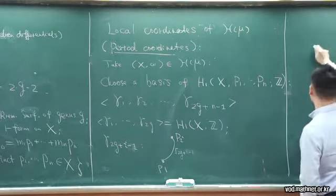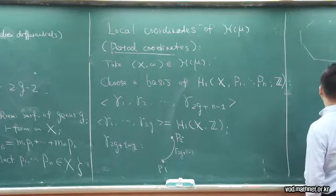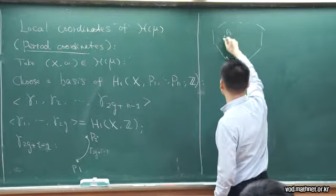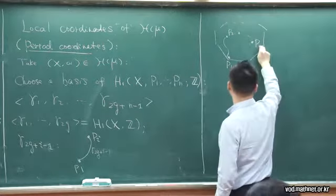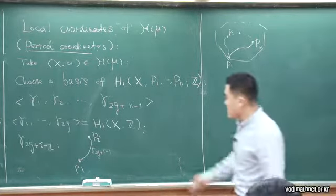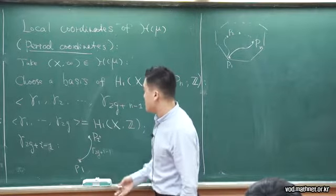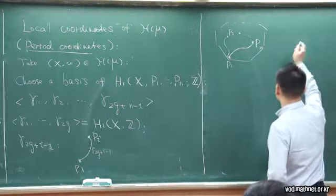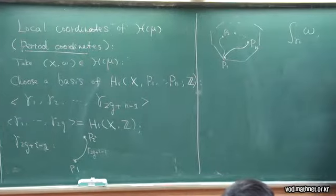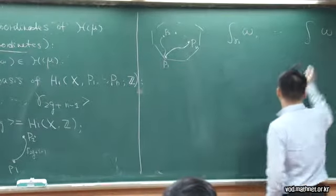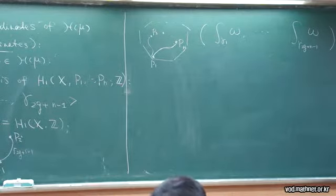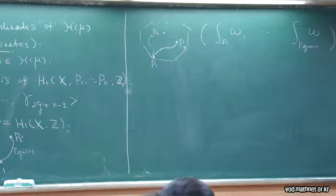Globally, the picture looks like you have some absolute periods given by the first 2g gamma's, and you have P₁, P₂, P₃ up to Pₙ, with some additional basis given by these γᵢ's. Now you have these one-dimensional paths γ and a one-form, so you can integrate the one-form along the path. We consider the integration of omega along γ₁ up to γ_{2g+n−1}, which gives you 2g+n−1 complex numbers. These 2g+n−1 complex numbers are called period coordinates for the space H_μ.